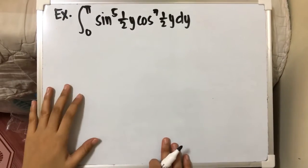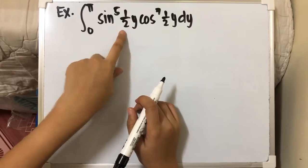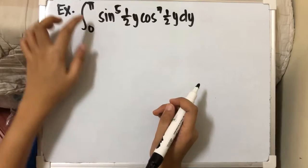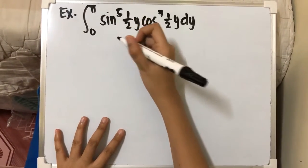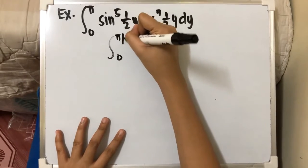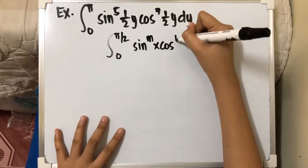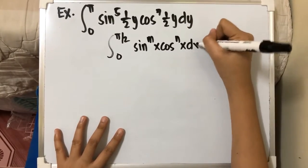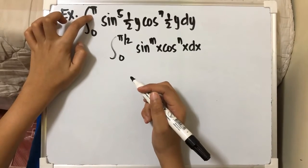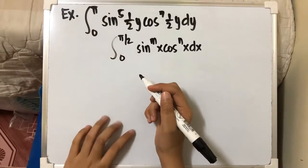We have another example: the definite integral of sine raised to 5 and 1 half y, cosine raised to 7 and 1 half y, dy, from 0 to pi. As we know, Wallis' formula comes in the form of 0 to pi over 2. But the limit here is only pi, so we need to change our limits to make it pi over 2.